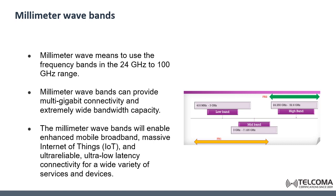Those bands typically consist of much larger amounts of spectrum than what is available in lower bands. So by using these wider bandwidths, the millimeter wave bands will enable the enhanced mobile broadband, the massive Internet of Things, the ultra-reliable communication, and ultra-low latency connectivity for many services and devices.